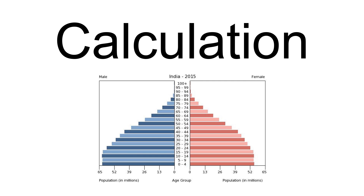To calculate population momentum for population A, a theoretical population is constructed in which the birth rate for population A immediately becomes replacement level. Under such conditions, the population will eventually stabilize into a stationary population, with no year-to-year changes in age-specific rates or in total population. The population momentum is calculated by dividing this final total population number by the starting population.